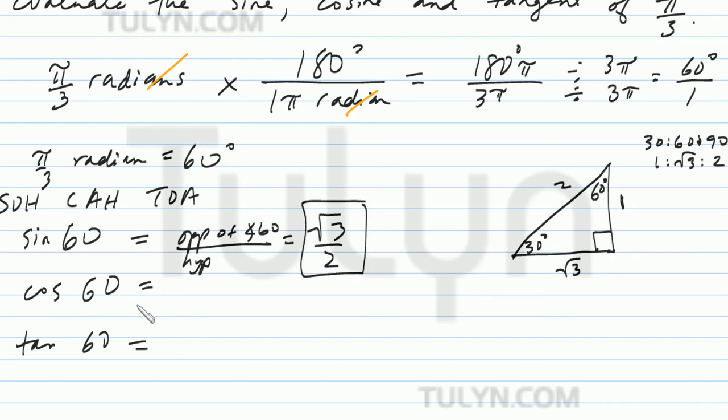And then cosine of 60 would be CAH, which is adjacent over hypotenuse. So adjacent to angle 60 would be 1. Hypotenuse is 2, so cosine of 60 degrees would be 1 half.